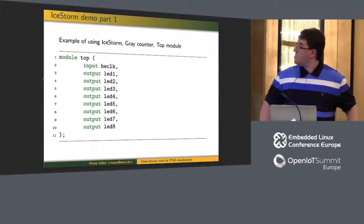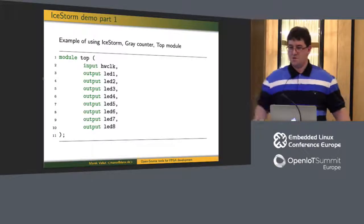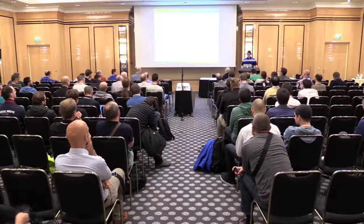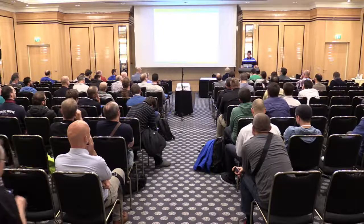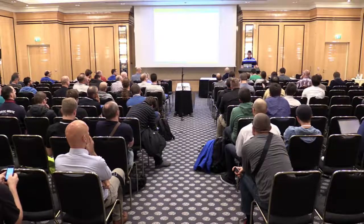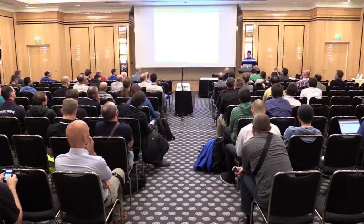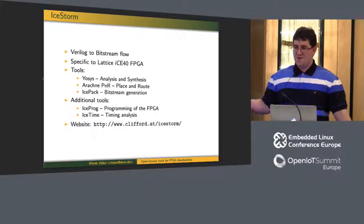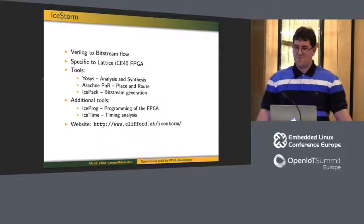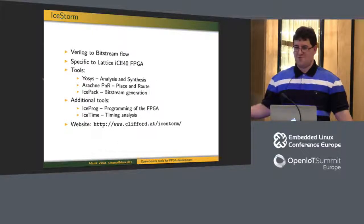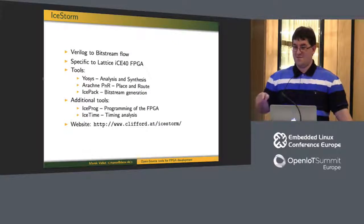Regarding what's still missing for a complete open source toolchain for any FPGA: the analysis and synthesis tools are available, and the framework for place and route (VPR) is available, but not the FPGA model for VPR, and the assembler is not available for other FPGAs. If those became available, we would have an open source toolchain with state-of-the-art place and route algorithms for pretty much any FPGA, which would be wonderful.